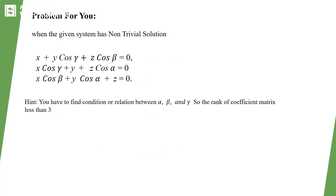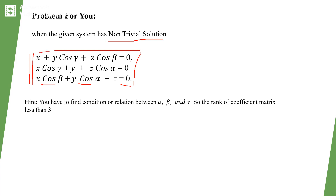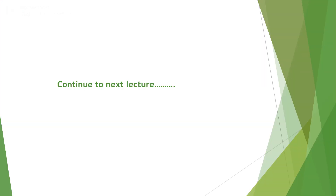Here is a problem for you to solve at home: find when the following system has a non-trivial solution — x + y·cos(γ) + z·cos(β) = 0; x·cos(γ) + y + z·cos(α) = 0; x·cos(β) + y·cos(α) + z = 0. Try to solve it, and if you cannot find the solution, leave a comment. We will discuss a new topic in the next lecture. Thank you.